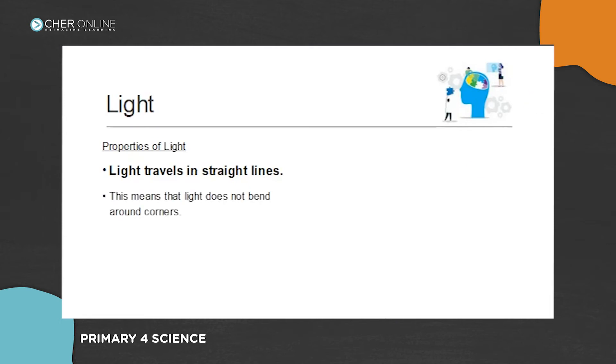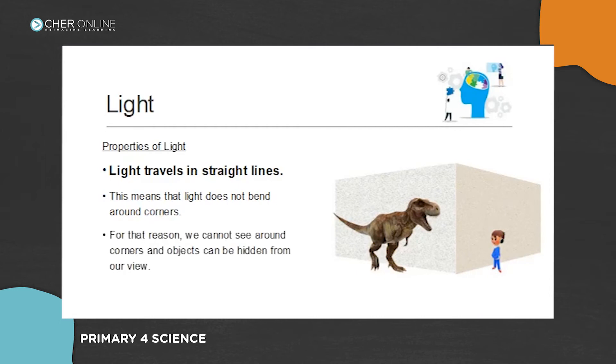This means that light does not bend around corners. Just like this dinosaur here, there's a wall, so this little boy here will not be able to see the dinosaur. For this reason, we cannot see around corners and objects can be hidden from us.